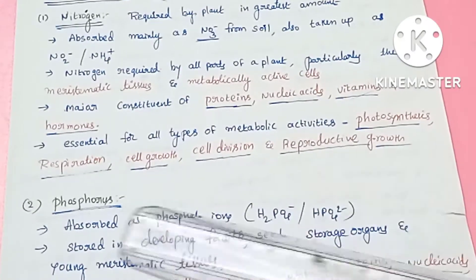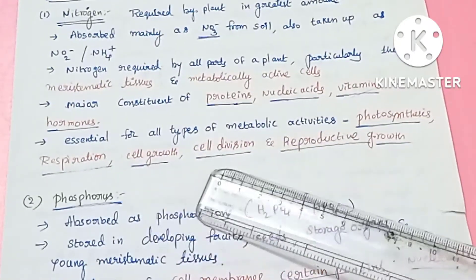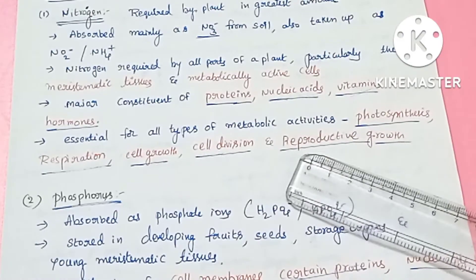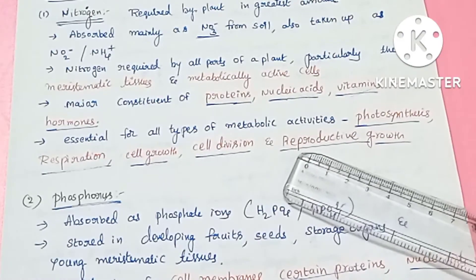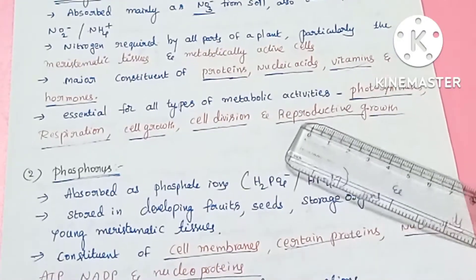Photosynthesis, respiration, cell growth, cell division, and reproductive growth all involve nitrogen. Nitrogen also plays an important role in plant metabolism.